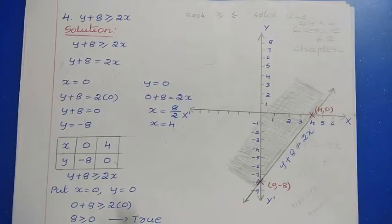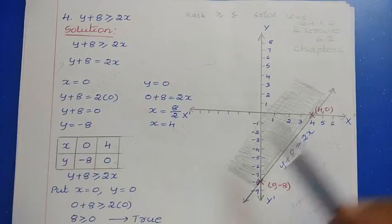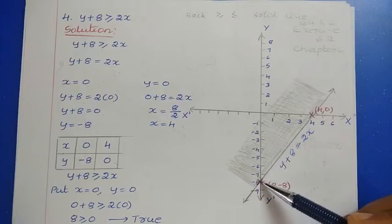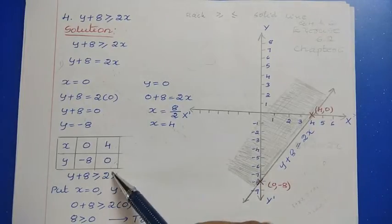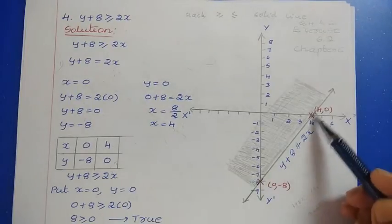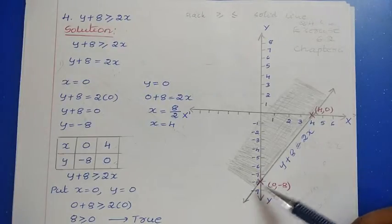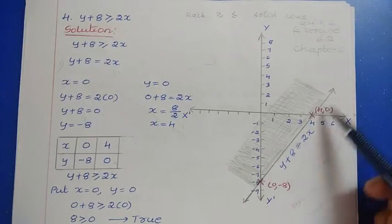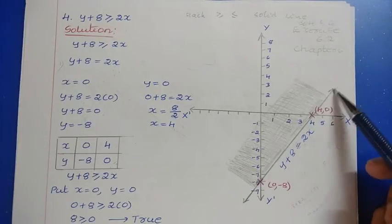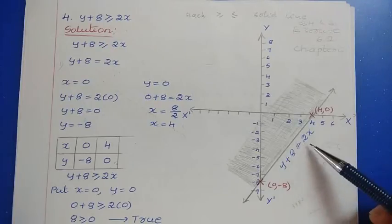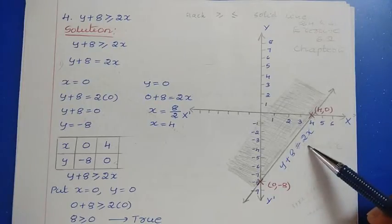Now let us locate the points on the graph. The first one is (0, -8), which is over here. Then (4, 0), which is this point. Now draw a straight solid line from this point to this point. This line represents y plus 8 equals 2x.